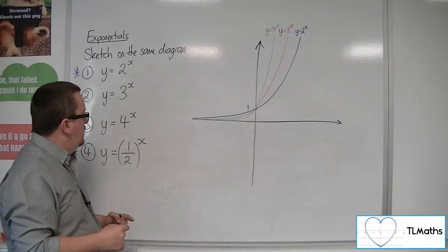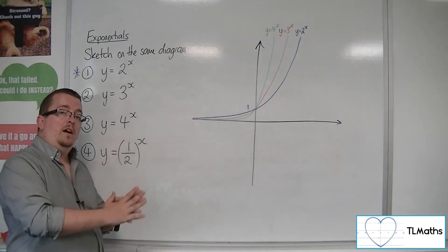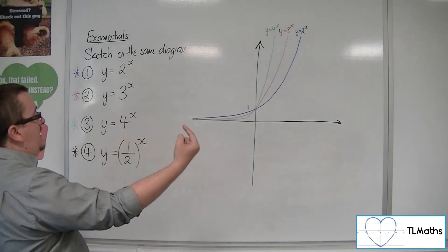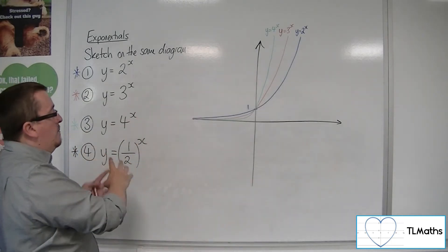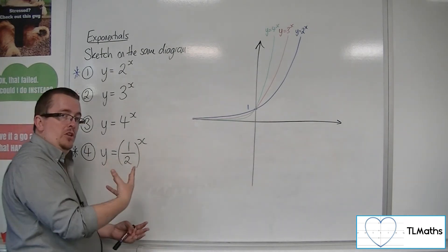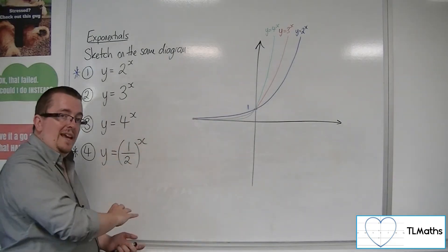Now, as x is increasing, so 1, 2, 3, the y values are going to go 1/2, a quarter, an eighth. And as x is decreasing, so minus 1, minus 2, minus 3, we're going to get 1/2 to the minus 1, which is 2, 1/2 to the minus 2, which is 4, 1/2 to the minus 3, which is 8.